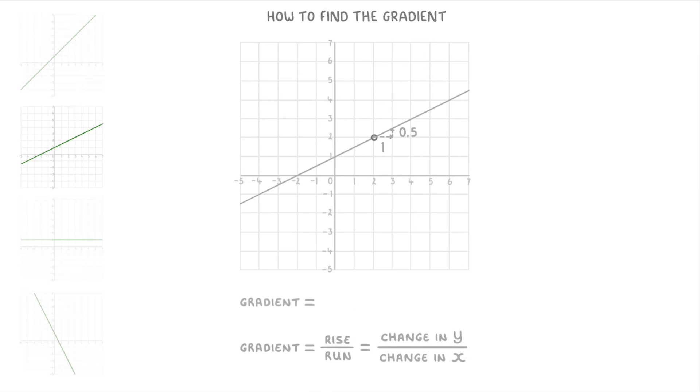So if we use the equation with our example here we just figured out that it went up by 0.5 so our rise or change in y would be 0.5 and it went across by 1. So that's our run or change in x. Which means that our gradient would be 0.5 divided by 1 which is just 0.5 just like we got before.